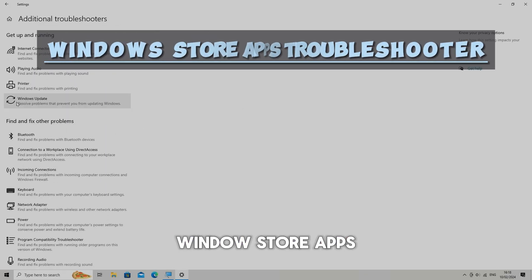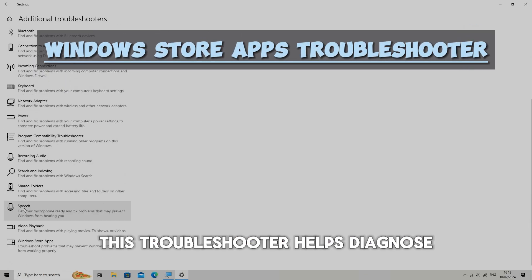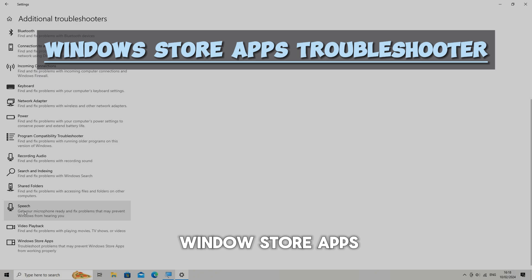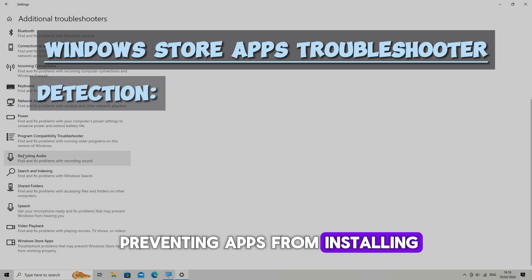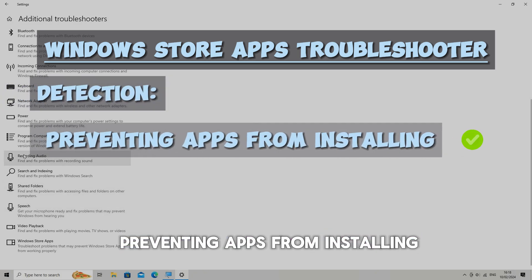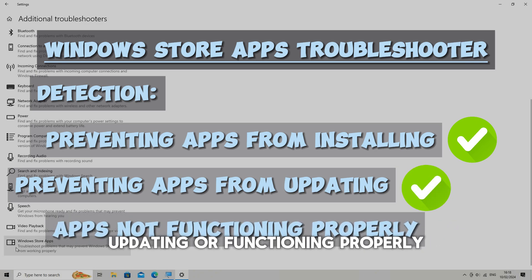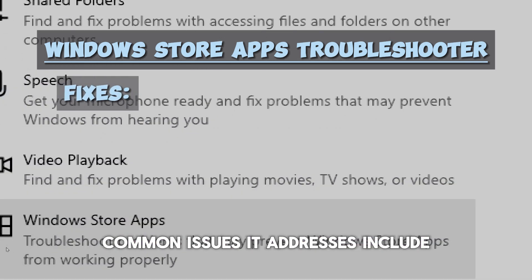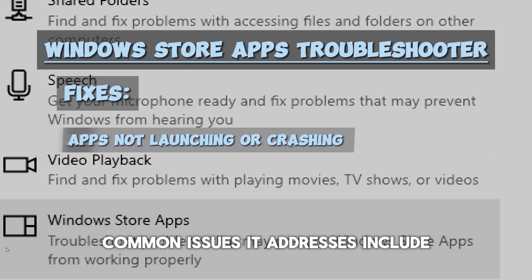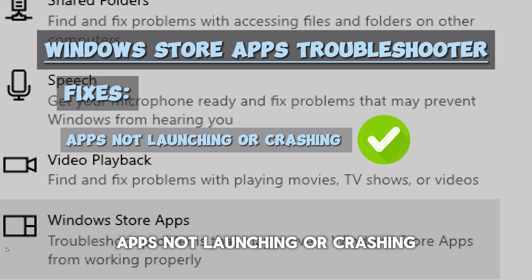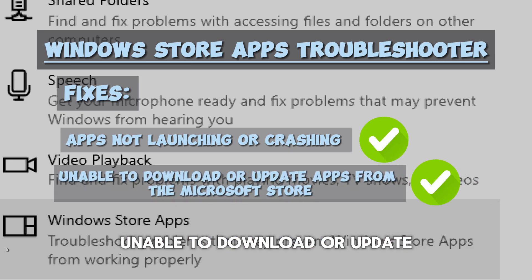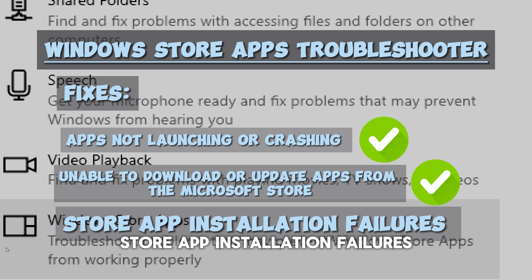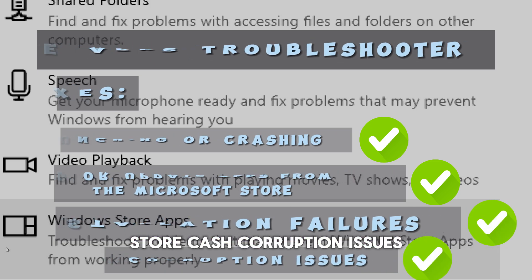The Windows Store Apps troubleshooter helps diagnose and resolve issues with Windows Store Apps. It can detect problems preventing apps from installing, updating, or functioning properly. Common issues it addresses include apps not launching or crashing, unable to download or update apps from the Microsoft Store, Store app installation failures, and Store cache corruption issues.